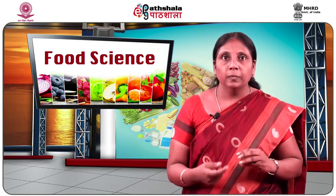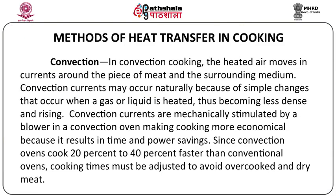The second method of heat transfer is convection. In convection cooking, heated air moves in currents around the piece of meat. The heated air moves around the meat and helps in cooking it. Convection currents may occur naturally because of changes when a gas or liquid is heated, becoming less dense and rising. Convection currents are mechanically stimulated by a blower in a convection oven, making cooking more economical through time and power savings. Since convection ovens transmit heat rapidly, they cook 20% to 40% faster than conventional ovens.